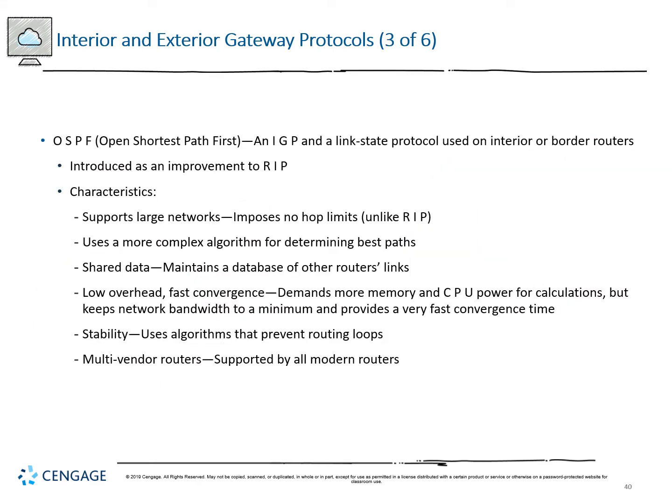OSPF — Open Shortest Path First — is an IGP link state protocol used on interior or border routers, introduced as an improvement to RIP. It supports large networks with no hop limits, uses a more complex algorithm increasing overhead, maintains a database of other router links, demands more memory and CPU for calculations, but has very fast convergence, keeps memory bandwidth to a minimum, prevents routing loops through internal algorithms, and supports all modern multi-vendor routers regardless of manufacturer.